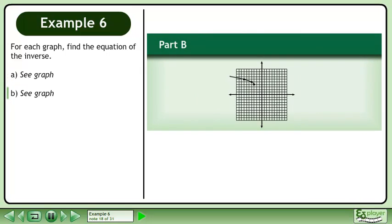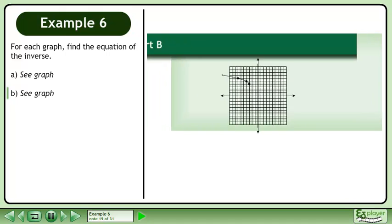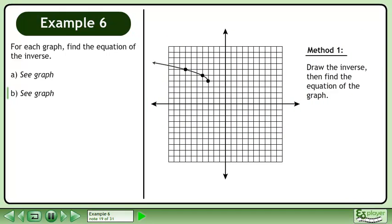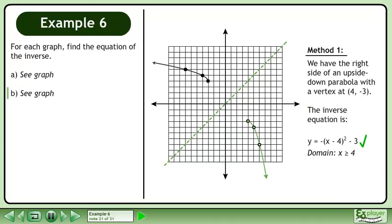Now we'll move on to part b. The first method we'll use to solve this problem is to draw the inverse, then find the equation of the graph. First draw the inverse by swapping the x and y values of every point on the graph. We have the right side of an upside-down parabola with a vertex at 4, negative 3. The inverse equation is y equals negative the quantity x minus 4 squared minus 3 with the domain of x is greater than or equal to 4.